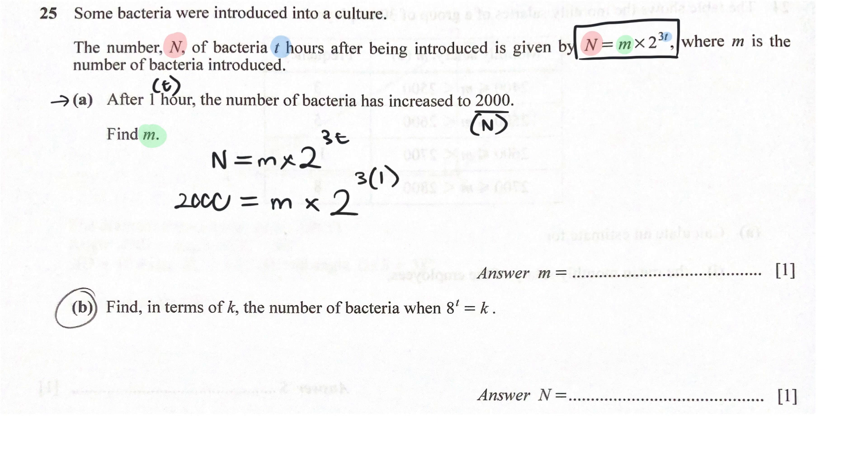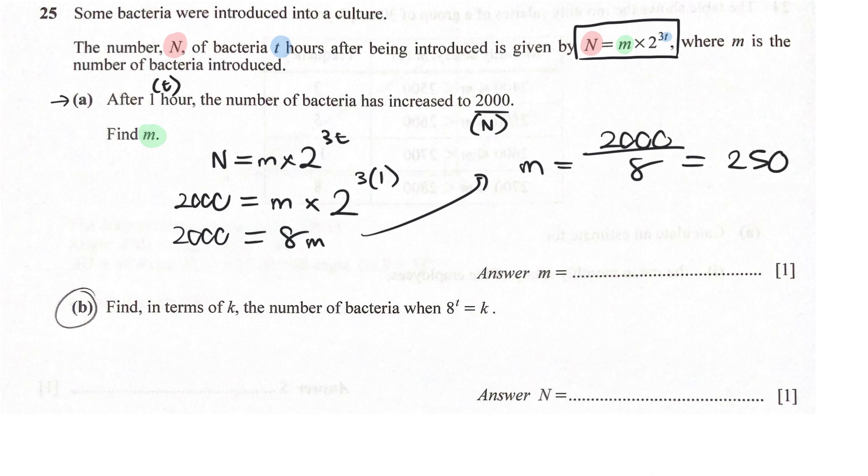And we're going to fit in the 1 here. Now, using my calculator, I have 2,000 equals 2 power 3, which is 8M. And all I have to do is find the value of M by taking 2,000 divided by 8, and that gives us 250. All right, so no problem.